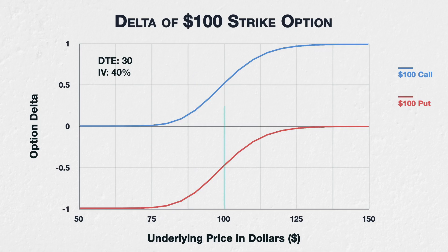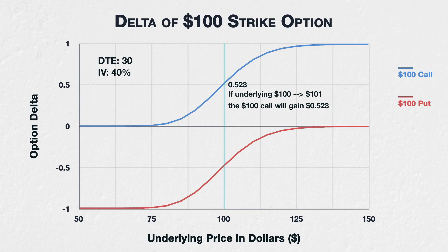When the underlying price is at $100, the $100 strike call option has a delta of about 0.523. The 0.523 delta means that if the underlying price increases by $1 to $101, if all else remains equal, we would expect our call option to gain about $0.523 of value. For that $1 of underlying price movement between $100 and $101, this is an equivalent profit to if we had initially bought $52.30 worth of the underlying asset instead of the call option.